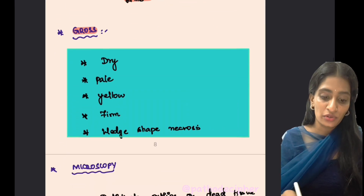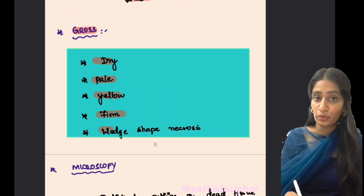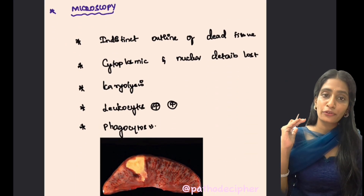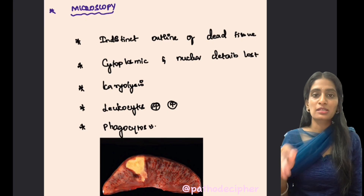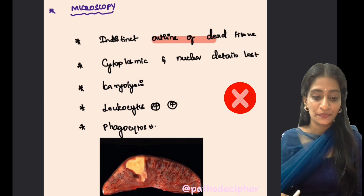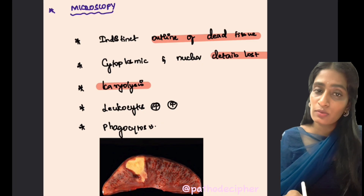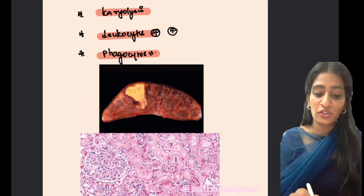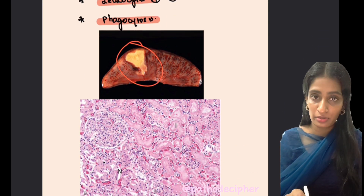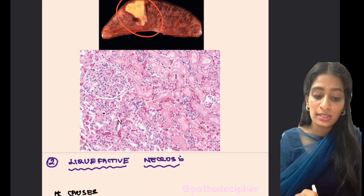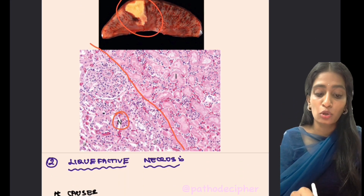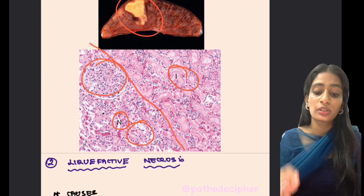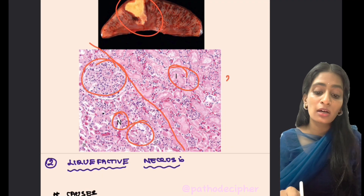Grossly in coagulative necrosis, the organ appears dry, pale yellow, and wedge-shaped necrosis is seen. Microscopically, there is preservation of the outline architecture but nuclear and cytoplasmic details are completely lost, with karyolysis, leukocytes, inflammation, and phagocytosis. In a kidney diagram, the normal area shows glomeruli and tubules, while the infarcted area shows preserved architecture but no cytoplasmic or nuclear details.